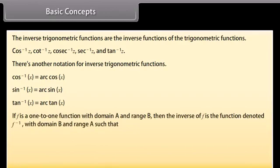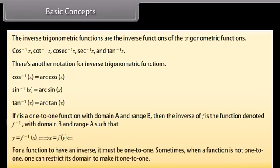Recall that if f is a one-to-one function with domain A and range B, then the inverse of f is the function denoted f⁻¹ with domain B and range A such that y = f⁻¹(x) if and only if x = f(y). For a function to have an inverse, it must be one-to-one. Sometimes, when a function is not one-to-one, one can restrict its domain to make it one-to-one.